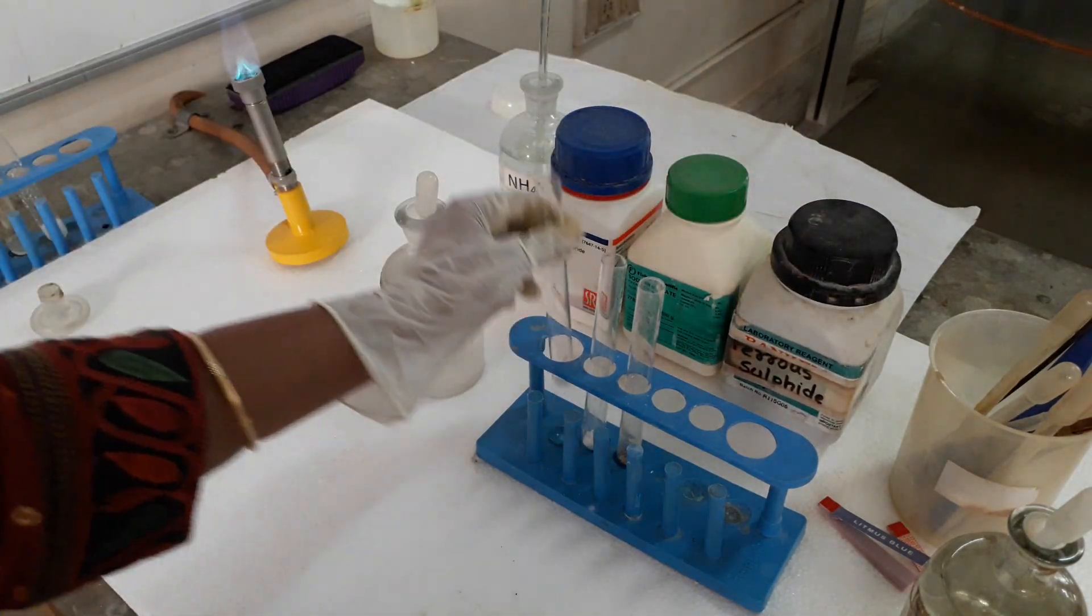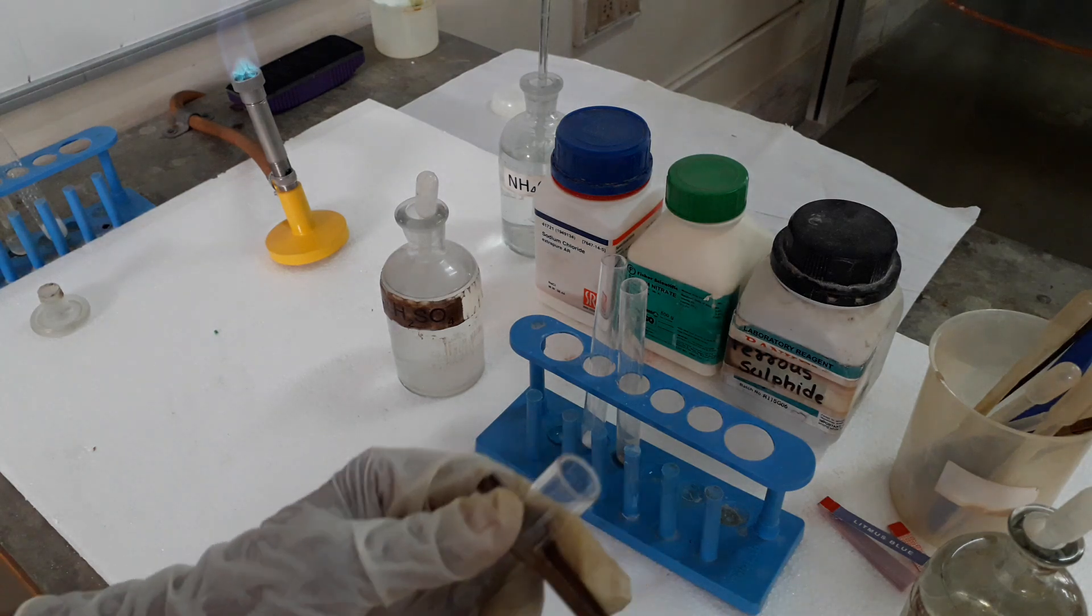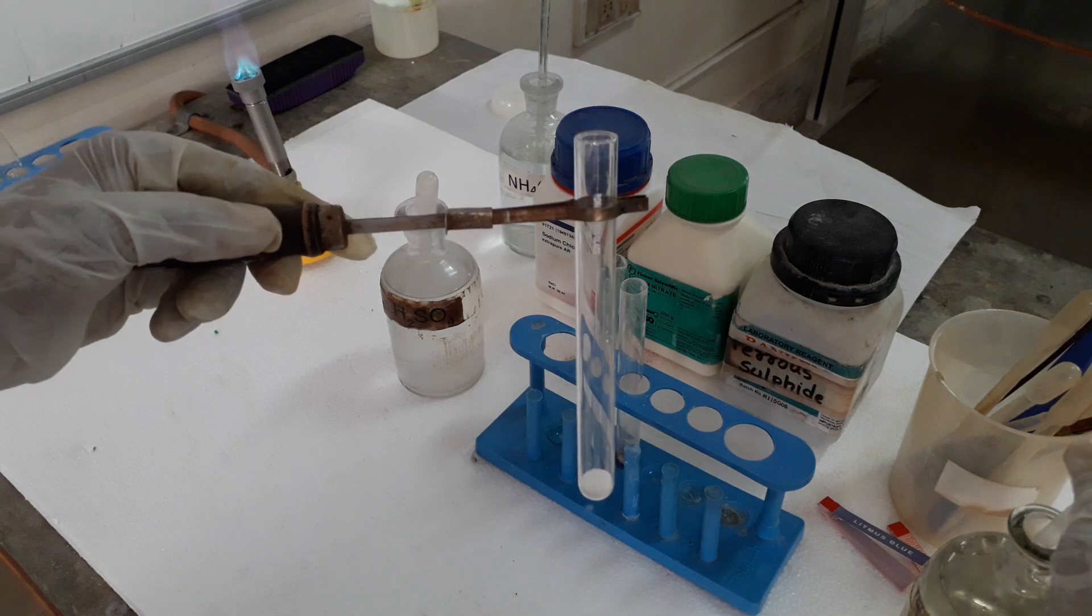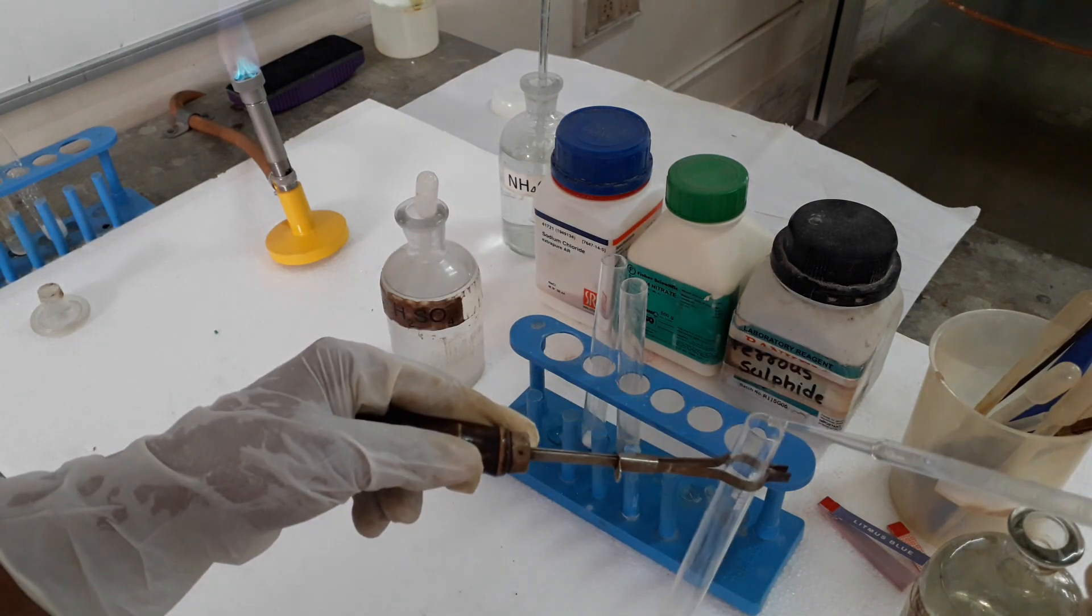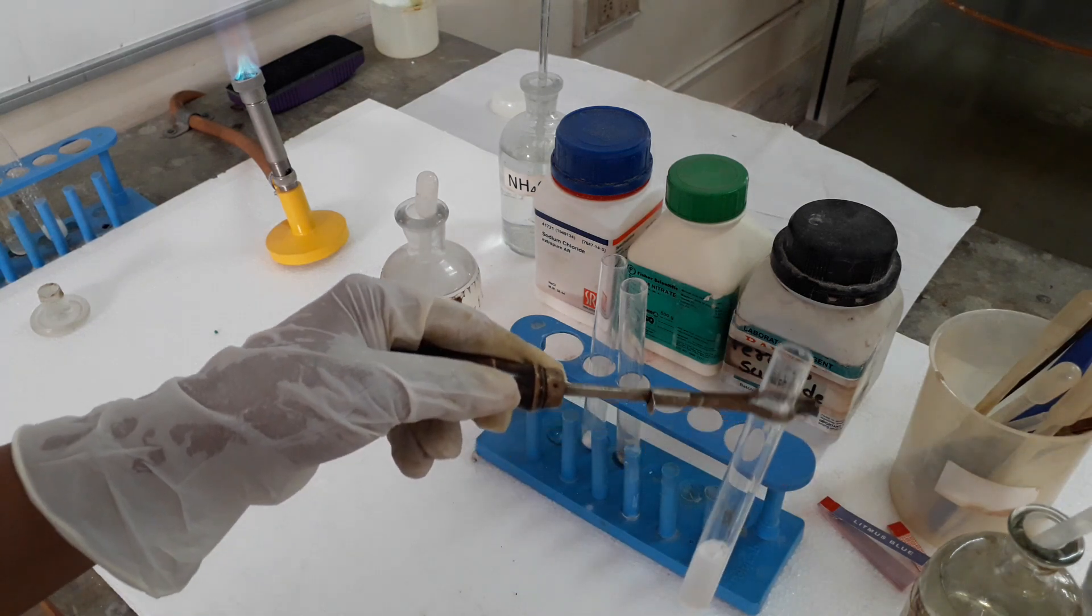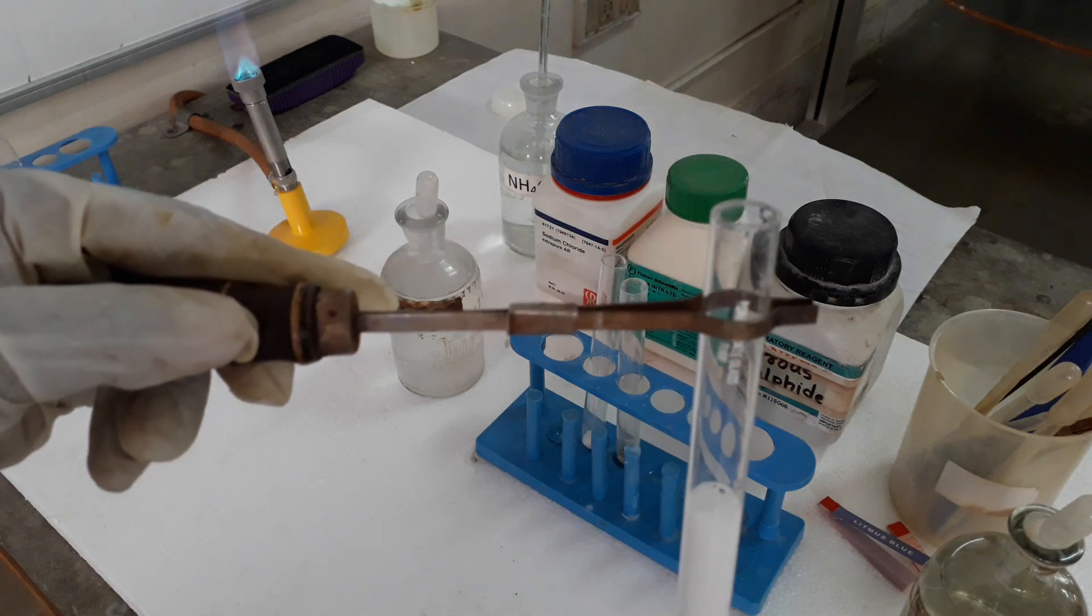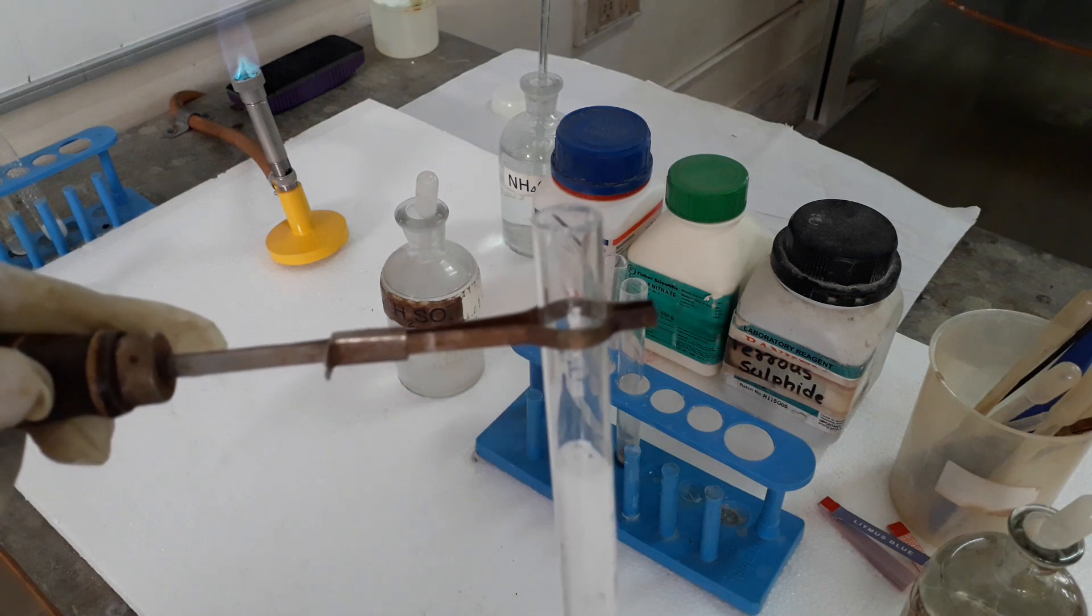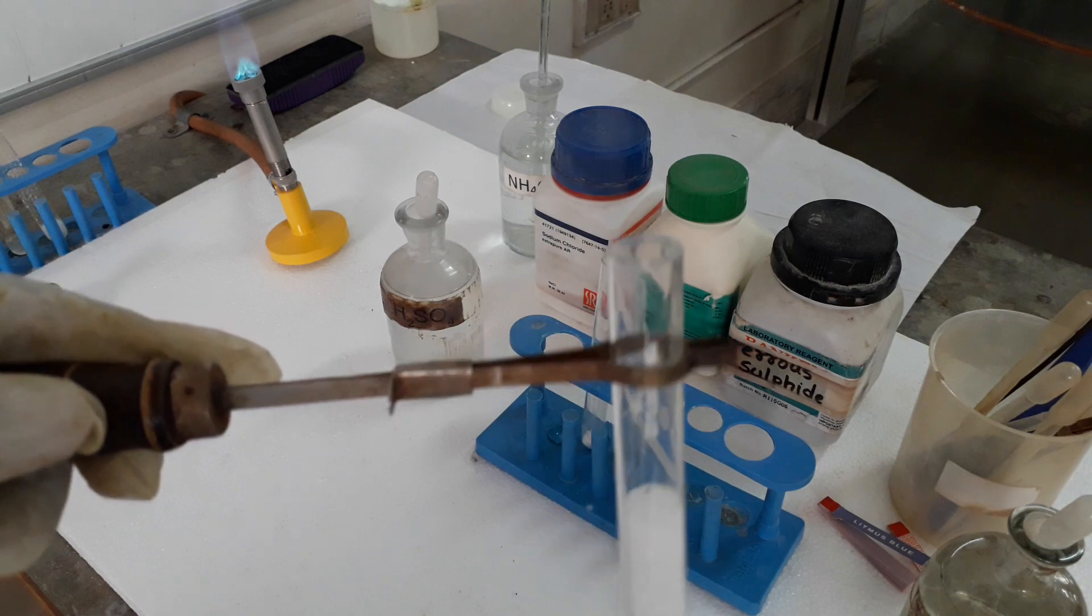First I am taking chloride, and we will be using a test tube holder for this. Let us add concentrated sulfuric acid. The first three anions were detected by dilute sulfuric acid, now these three will be detected by concentrated sulfuric acid. You will see that fumes started coming out from the test tube. These are HCl gas fumes in moist air.